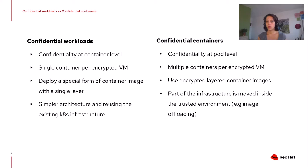Confidential workloads use a special form of container images. Confidential containers use layers like a regular container, but those layers are encrypted. Generally, confidential workloads are more restricted and limited than confidential containers and don't fit all use cases. However, they have a simpler architecture and try to reuse existing Kubernetes infrastructure without modification. Confidential containers probably fit more use cases and are more generic, but come at the cost of a more complex infrastructure — for example, image loading is moved inside the trusted environment.